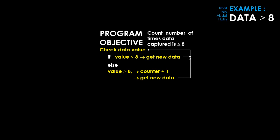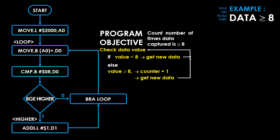This is the program's flowchart. The first box is to initialize A0 to 2000. A0 is going to be our address pointer. Next, a byte of data from memory is read into register D0 using the move instruction. This instruction is attached to label loop. Then the data in D0 is compared to 8 using a compare instruction, which will affect the status register flags.